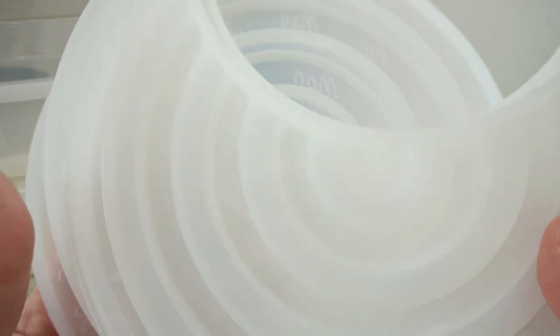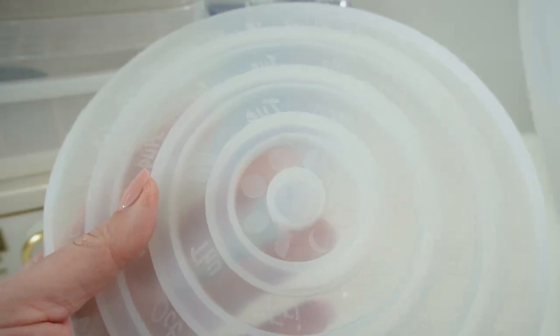So here are the supplies. First is the mold. This is a three-piece mold so we have the calendar piece here and then the front and the back of the holder.